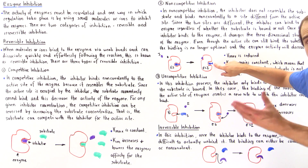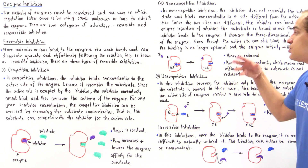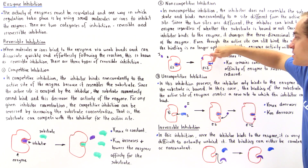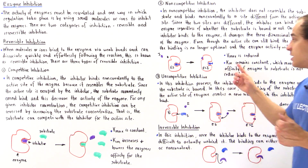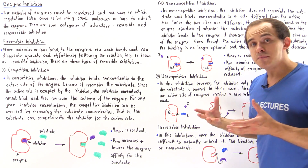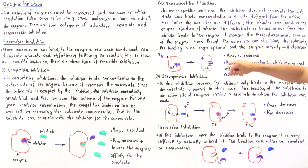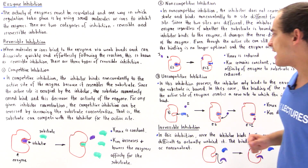Even though the active site can still bind our substrate, the binding is no longer optimal and enzyme activity will decrease. The substrate can still bind to form an enzyme-substrate-inhibitor complex, but this is no longer an active enzyme because the substrate does not fit perfectly. At any given time, because we'll have the inhibitor bound to our enzyme, we'll have fewer active enzyme molecules and the Vmax will be reduced. However, the ratio stays the same, so the Km, our Michaelis constant, remains constant — meaning the affinity of the enzyme to the substrate does not change.